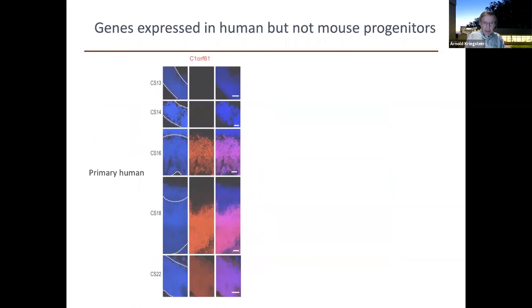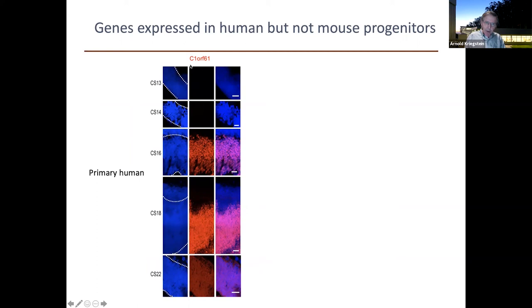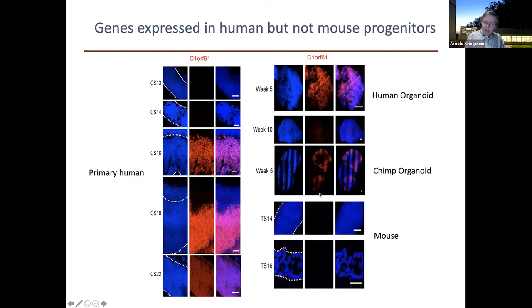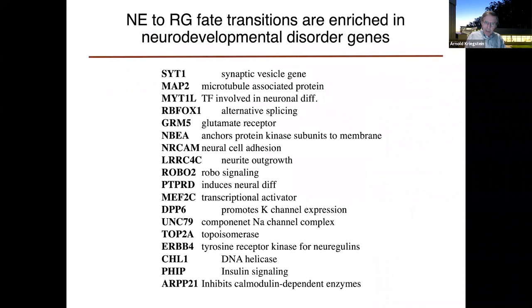We're exploring whether we can manipulate some of these genes to shift the point of transition. Some genes characteristic of early progenitor types — such as C1ORF61 — are highly expressed in human tissue and at similar stages in human and chimp organoids, but not at all in mouse. Several such gene expression patterns are seen in humans but not in mouse. Many of the genes enriched in the nine early progenitor populations are also associated with neurodevelopmental disorders, though this work is ongoing.